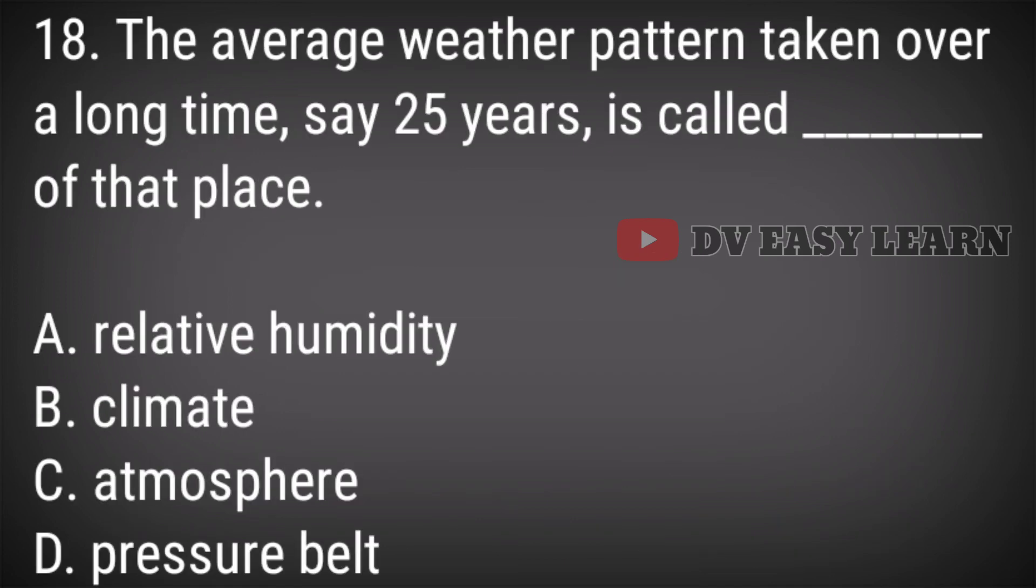Question 18: The average weather pattern taken over a long time, say 25 years, is called what of that place? Answer: Climate.